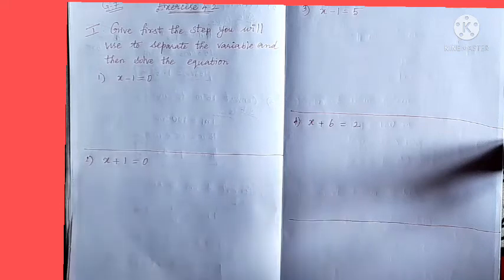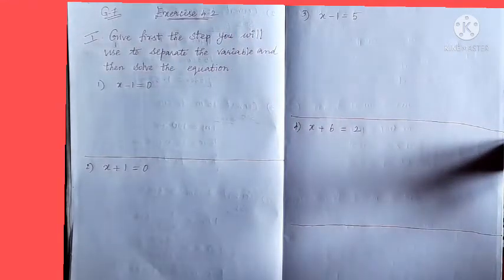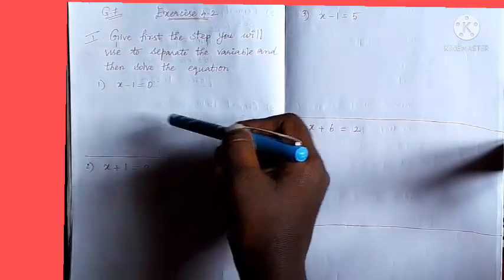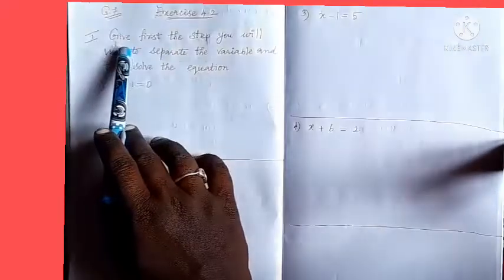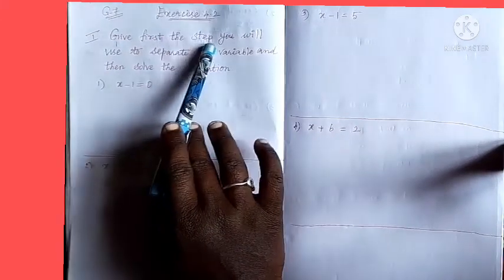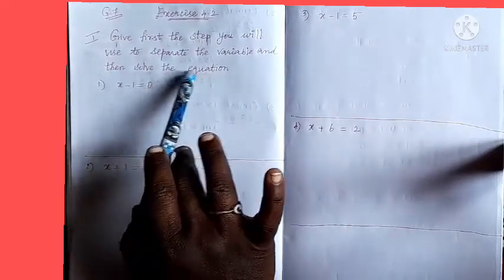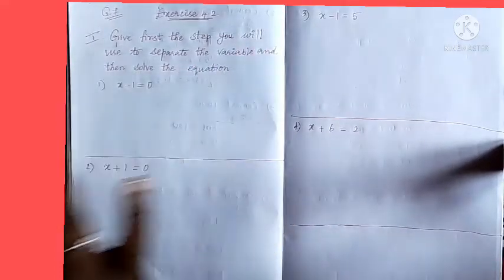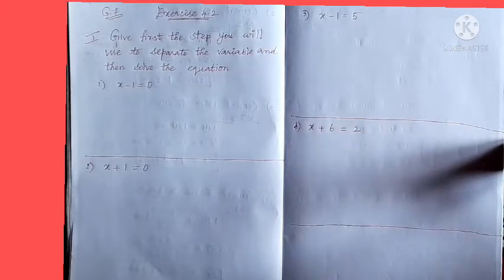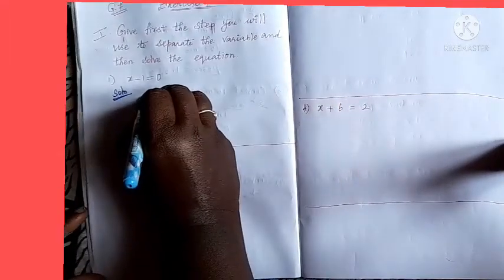Happy morning to all children! Today we are going to see the next exercise 4.2. It is similar to the first exercise with just a small difference. It's a very easy exercise. The question asks you to first give the step you will use to separate the variable, and then solve the equation.